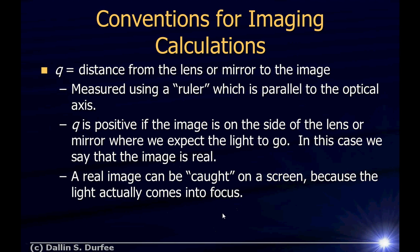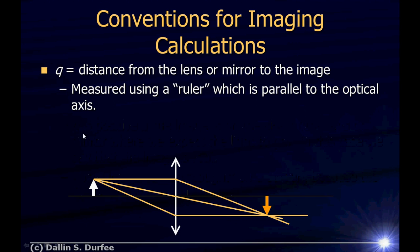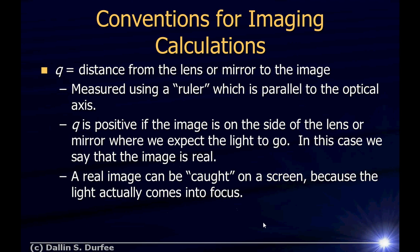If I have a point of light and it comes to a focus, I can put a piece of paper there and see a point. If this is Uncle Bill's face, the rays come to focus over here, I can put a piece of paper and actually capture an image, or put film and capture a picture of Uncle Bill's face, because Q is positive, giving us a real image.